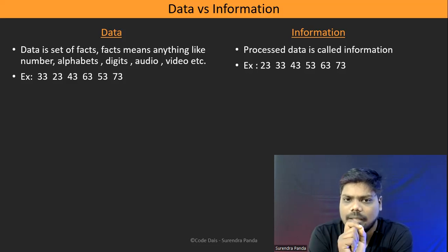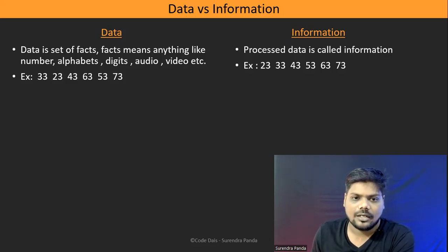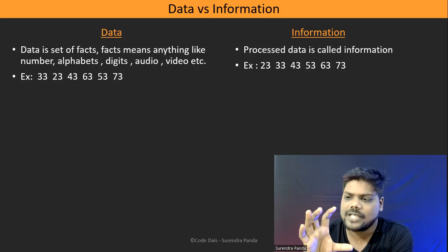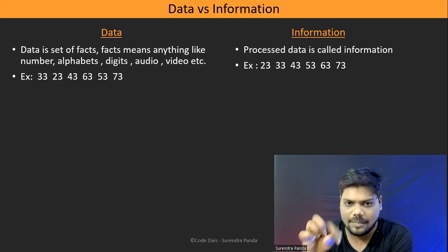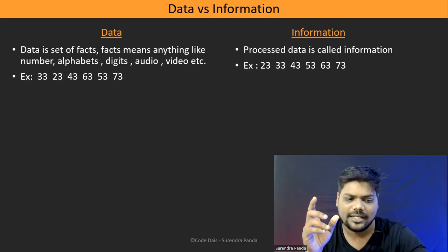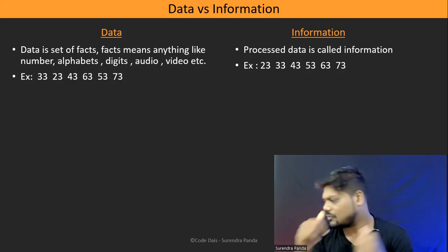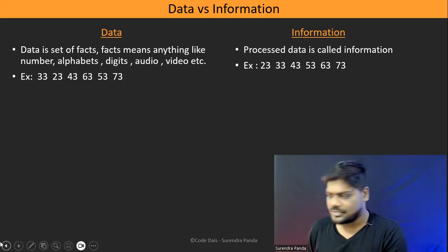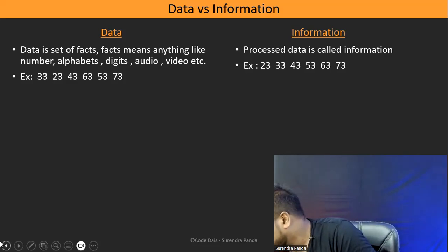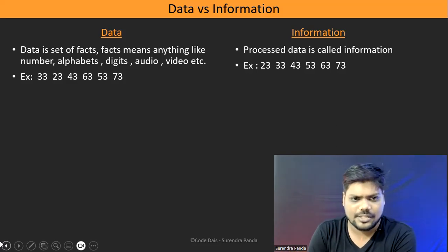That's clear-cut information. Next example: suppose I have a movie divided into five parts — part 1, part 2, part 3, part 4, part 5. Suppose randomly I give them to you like part 3, part 2, part 1, part 5, part 4 — that is called data. You have to arrange it: part 1, part 2, part 3, part 4, part 5. That arranged version is called information.